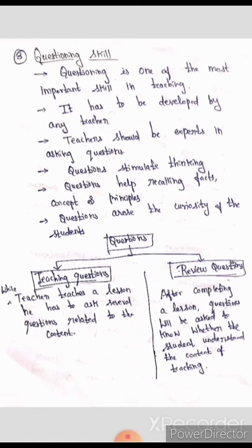Questioning skills involve two types of questions: teaching questions and review questions. A teaching question is one asked during the lesson while it is ongoing. A review question is asked after you have completed a lesson, to check whether the concept was understood or not. That is the difference between teaching questions and review questions.